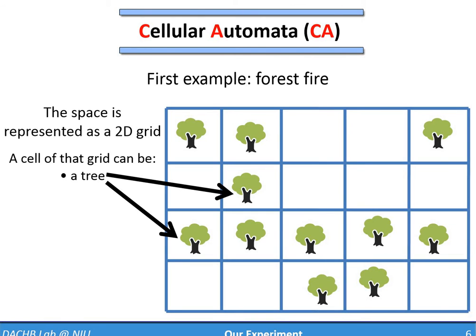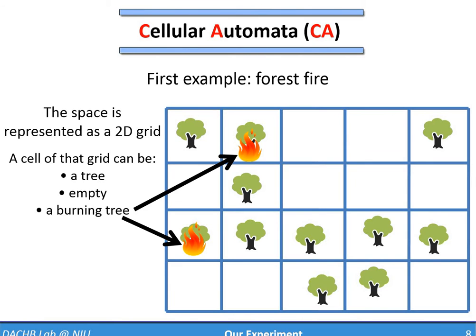Second, a cell may be empty. You can think of this as a clearing in the forest. And finally, when you study forest fires, you need to know which trees are burning. So the last possibility is for burning trees.